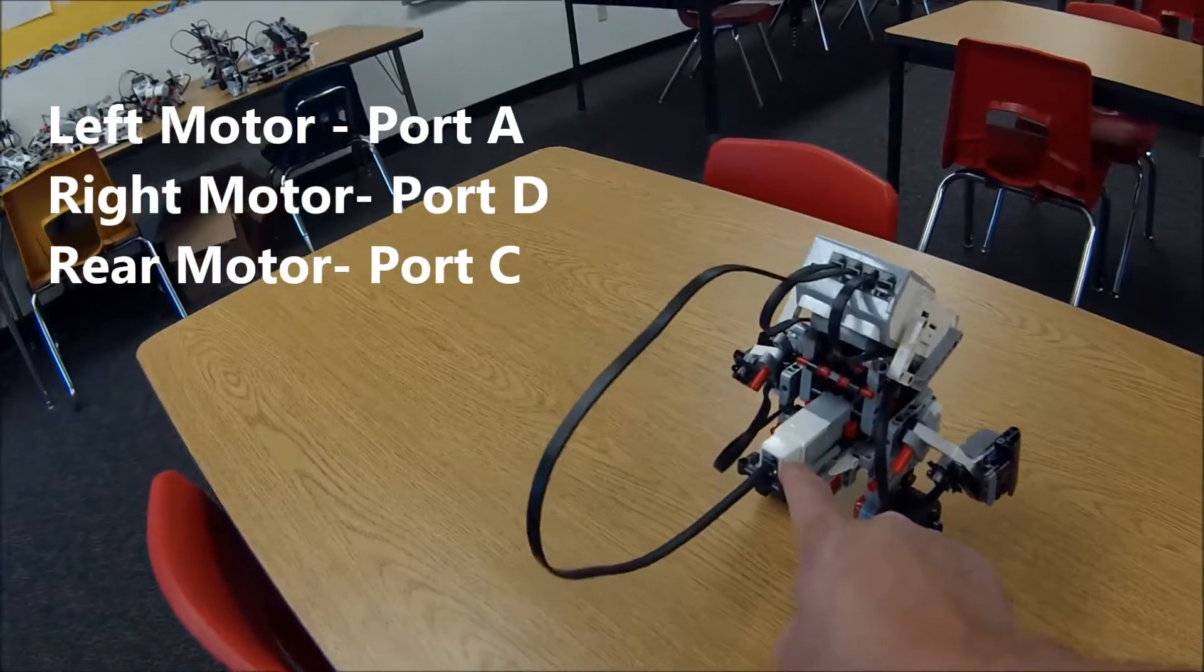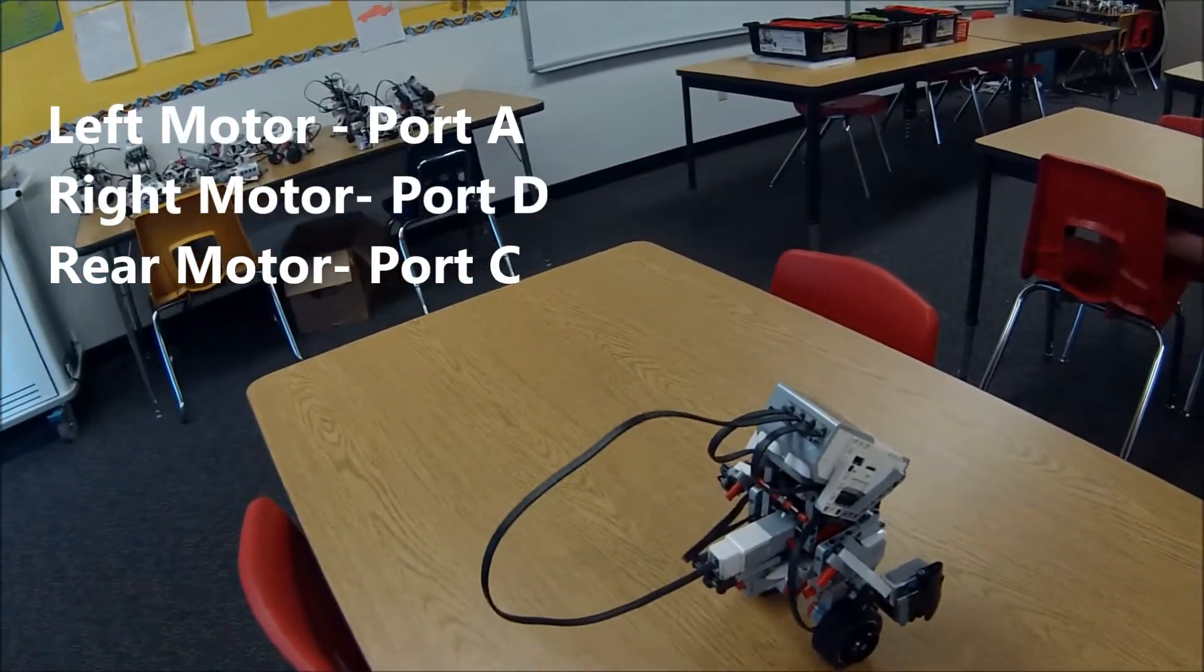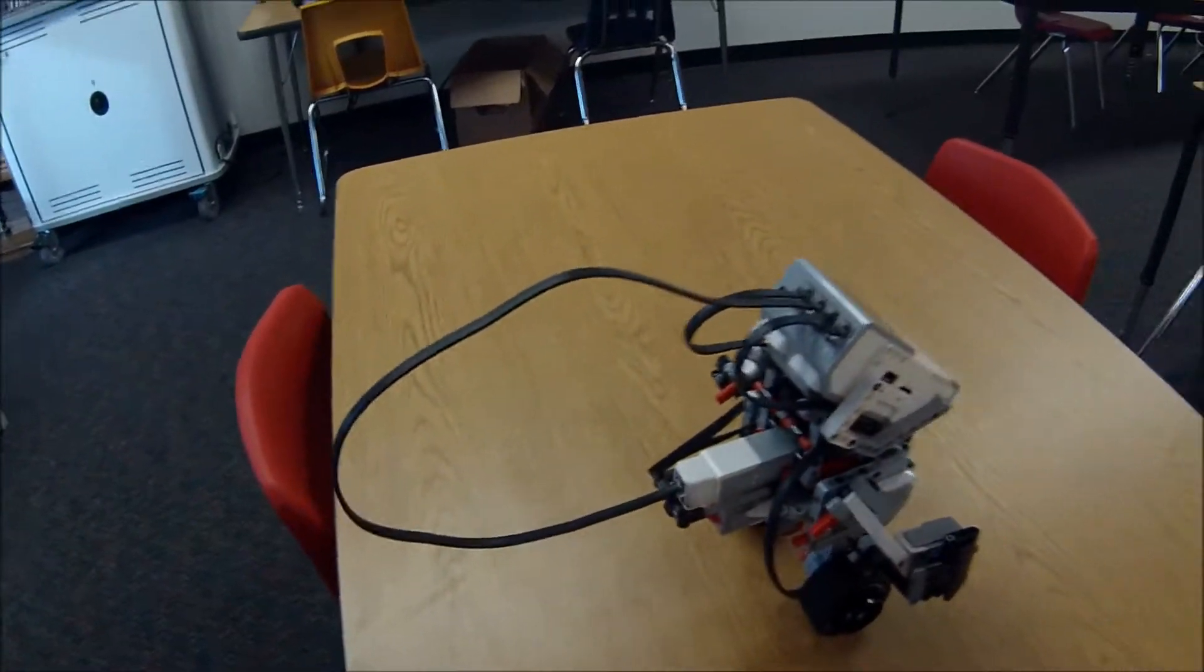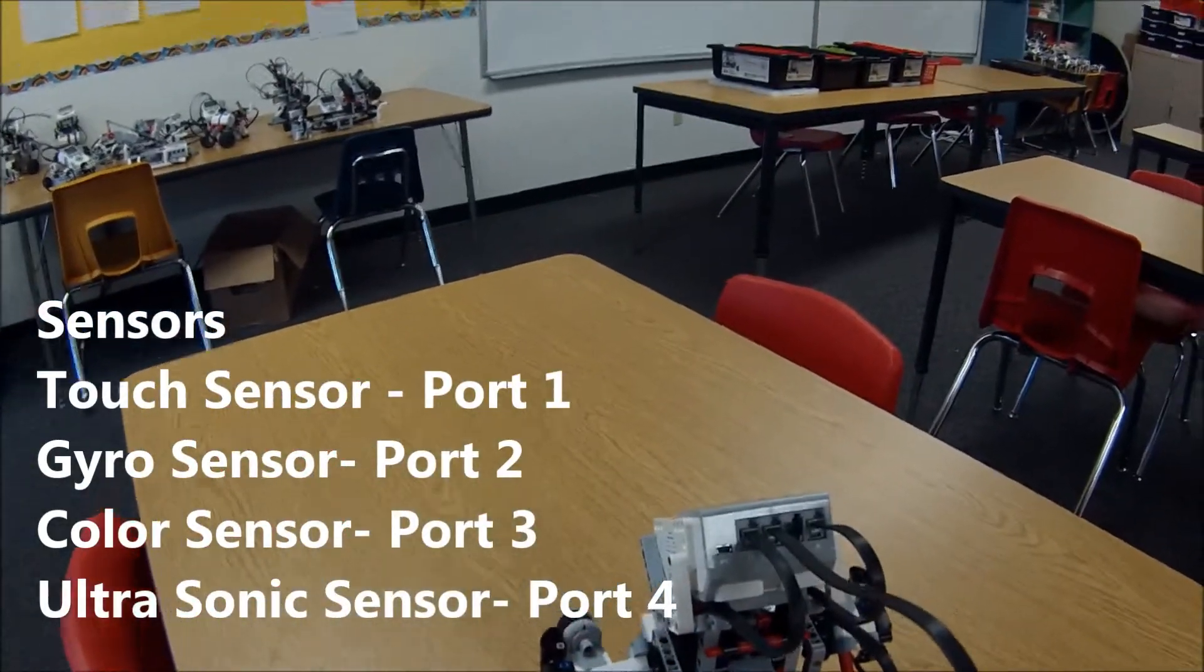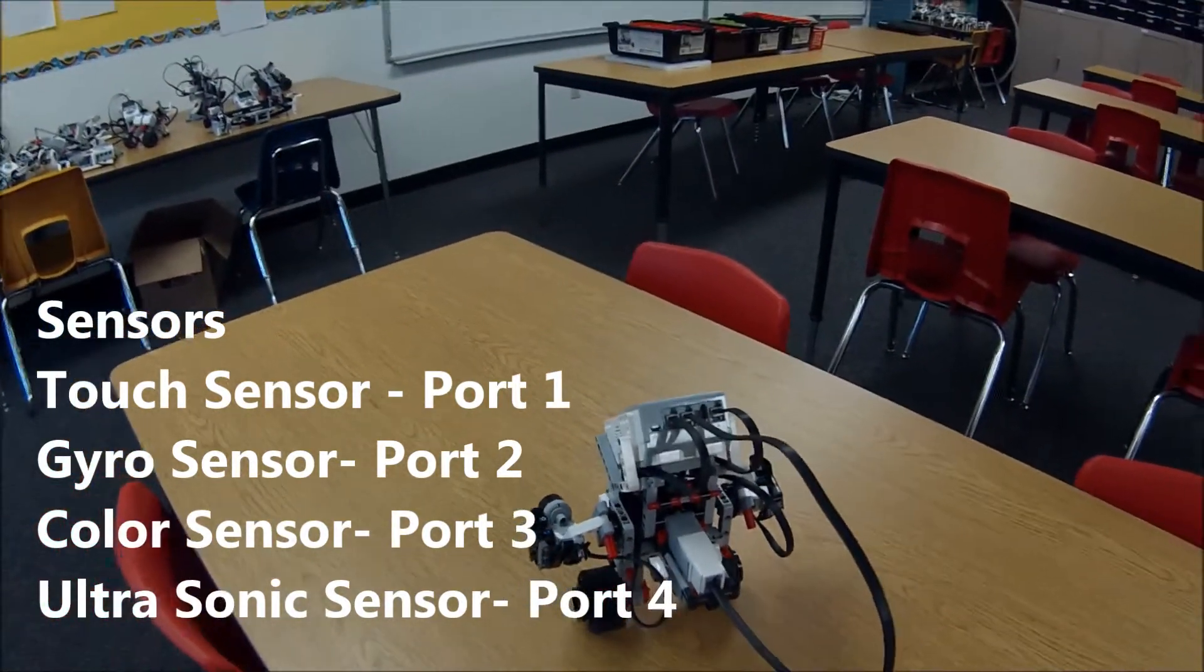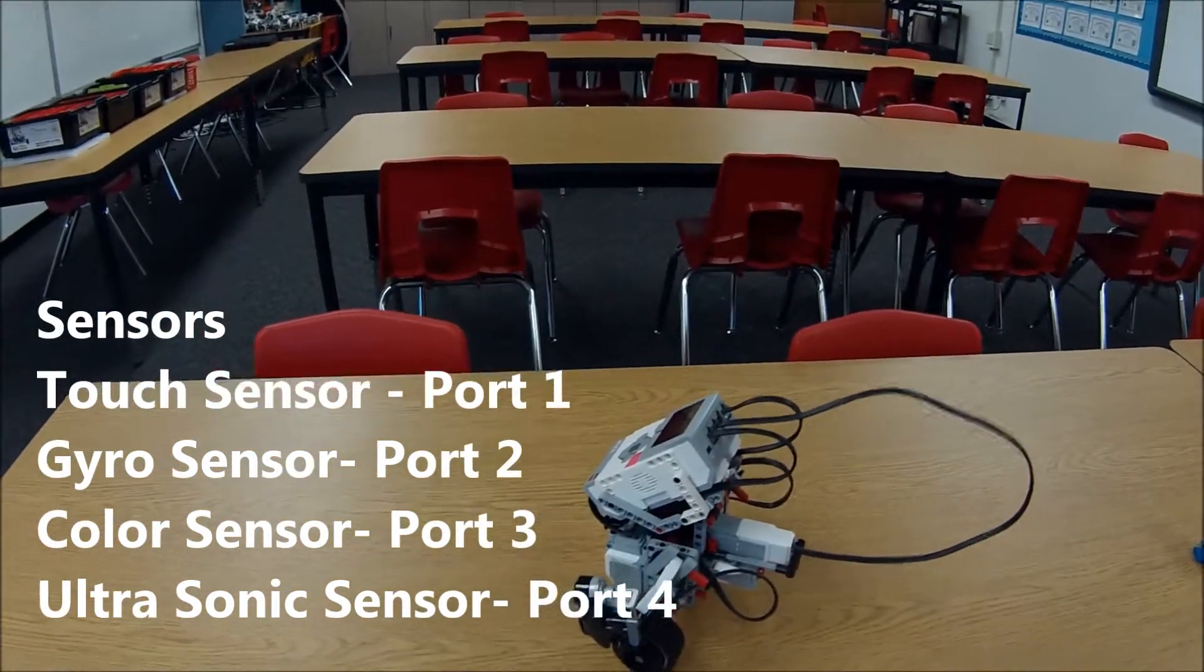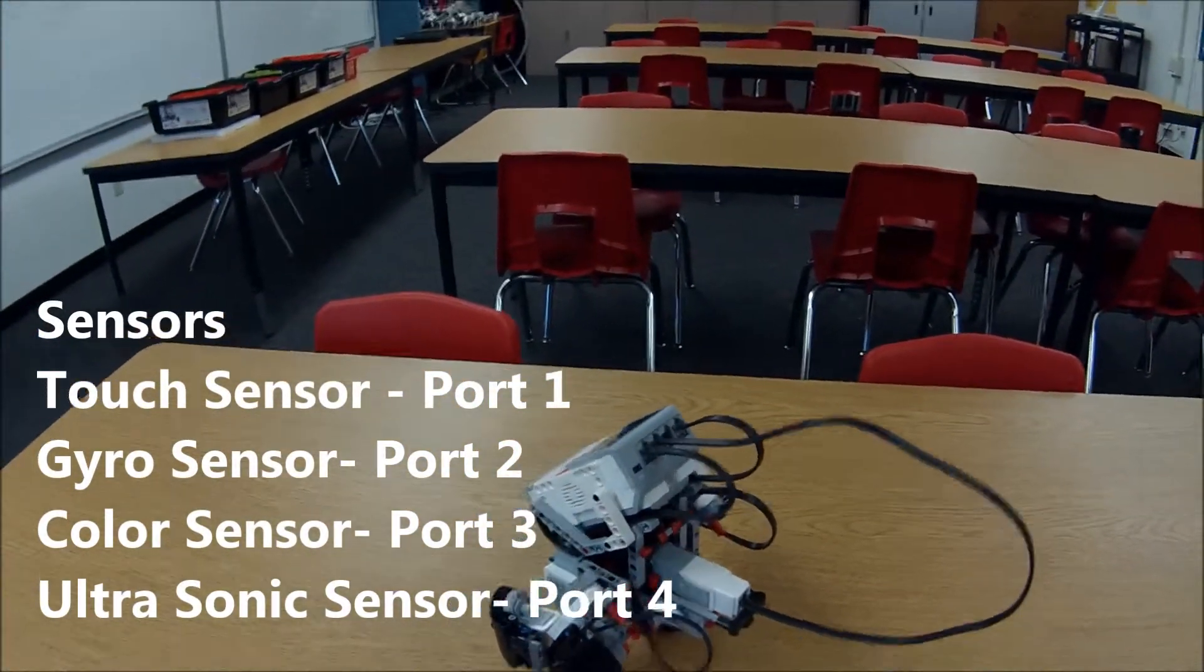And this motor right here is going to go into port C. And then for your sensors: the touch sensor is going to go in port 1, the gyro sensor is going to go in port 2, the color sensor is going to go in port 3, and the ultrasonic sensor is going to go into port 4.